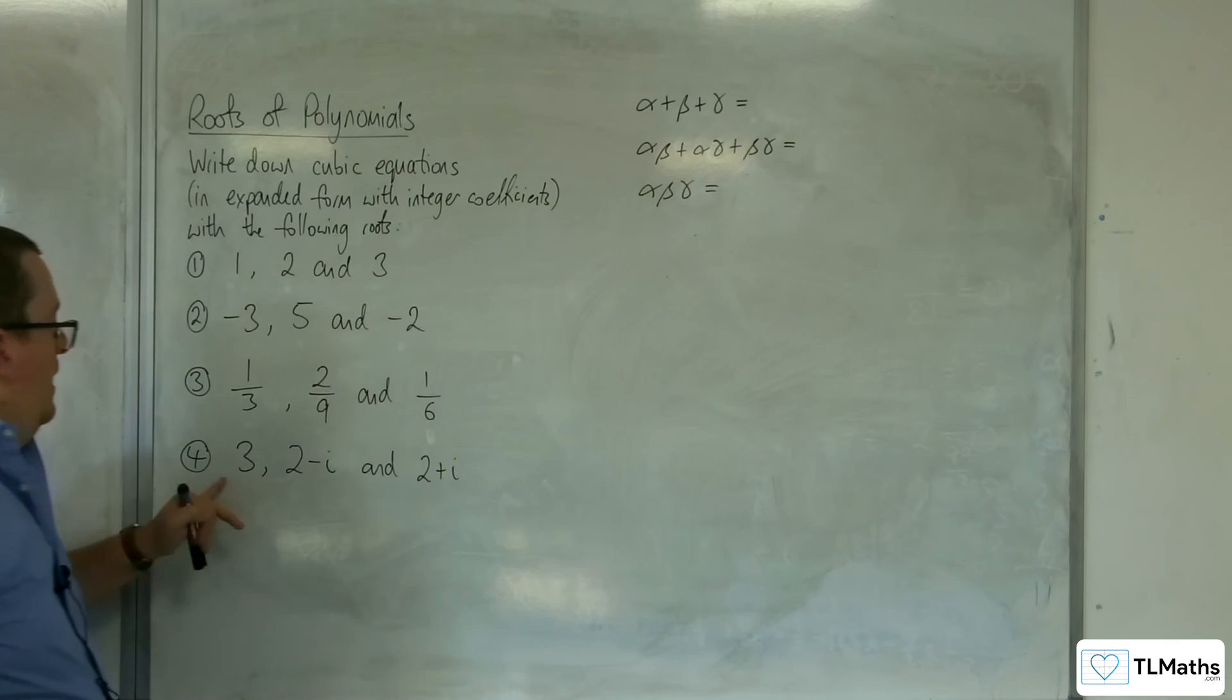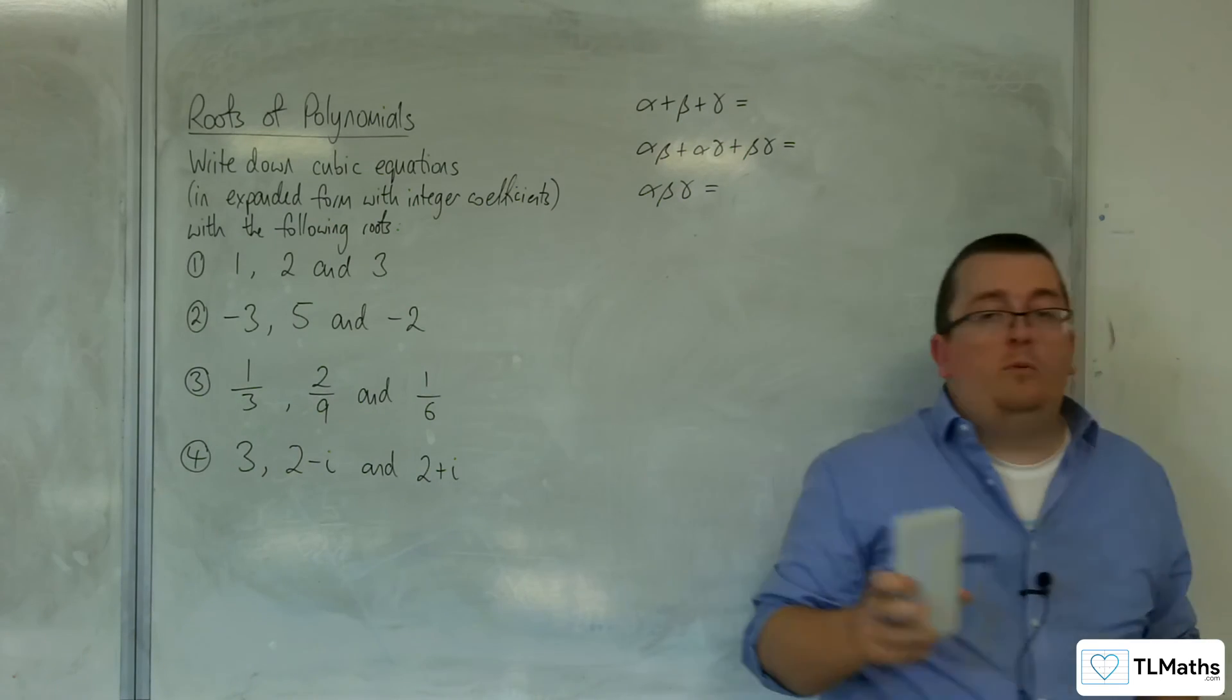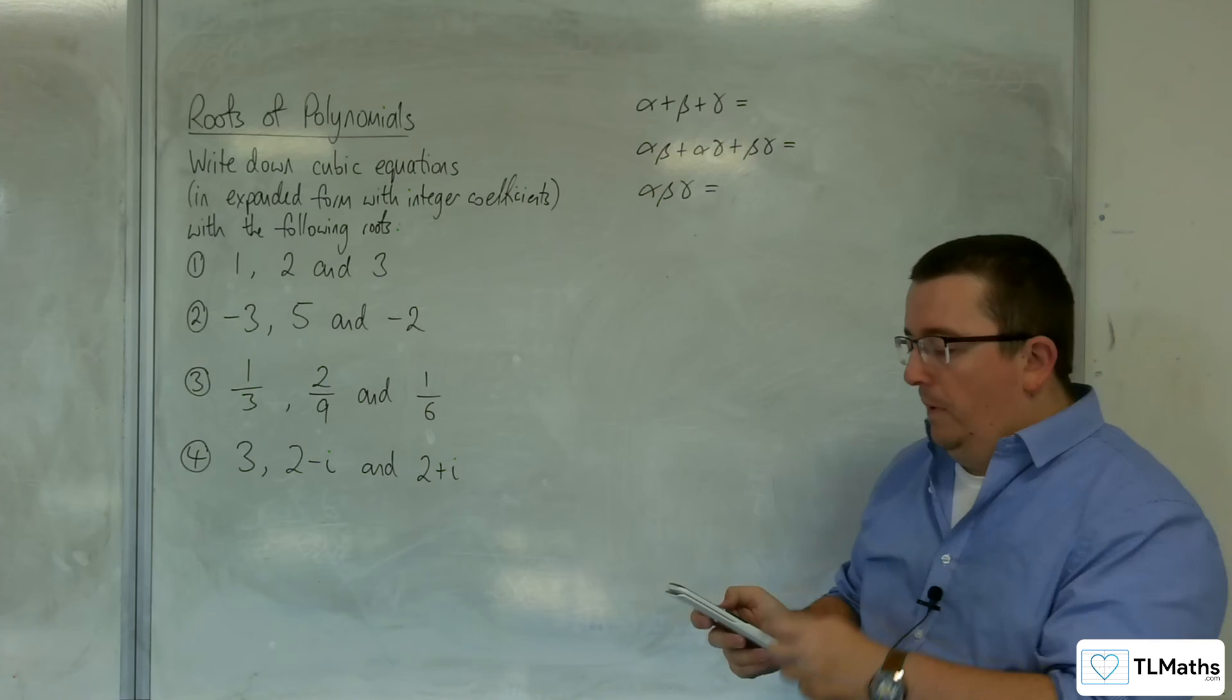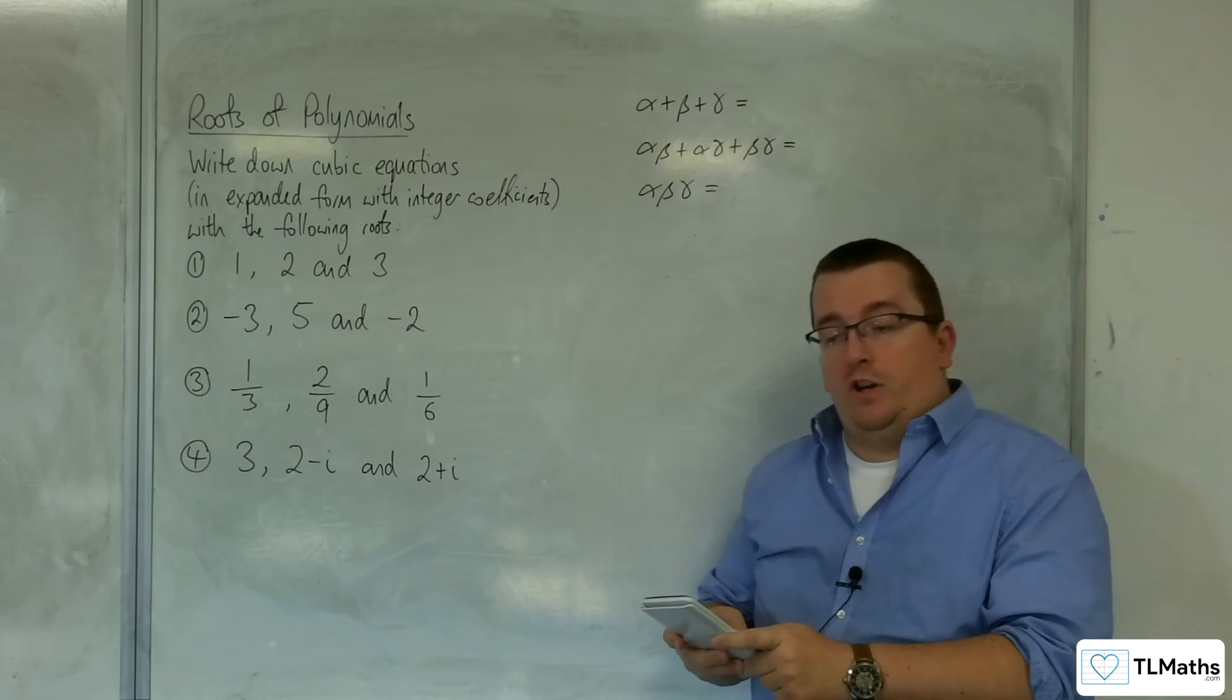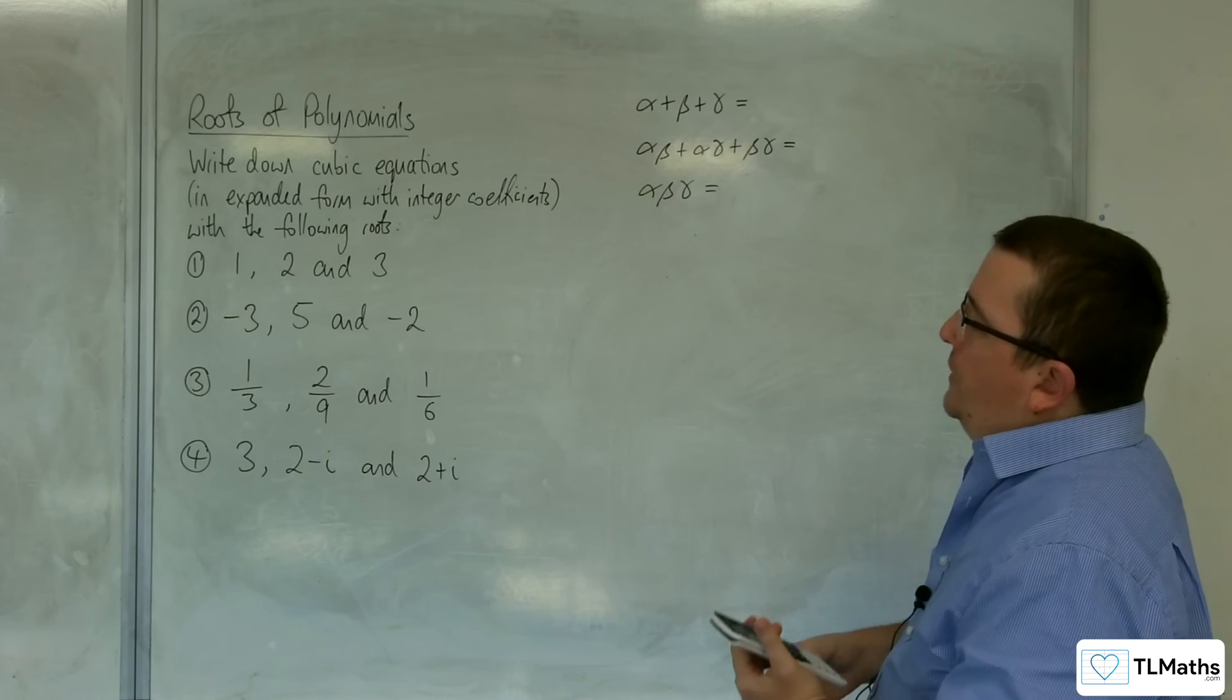So, we've got the last one. So, what I'm going to do is I'm going to put my calculator into complex mode. So, you want to go to menu and then option number 2.